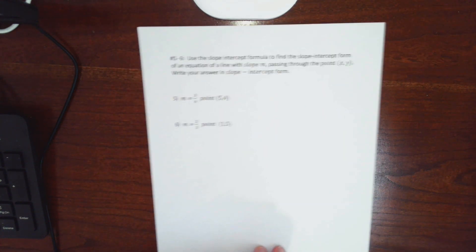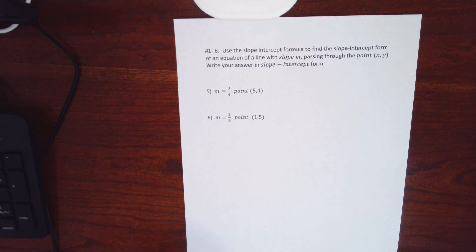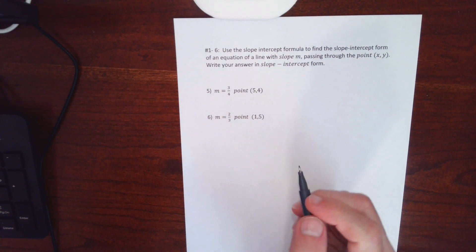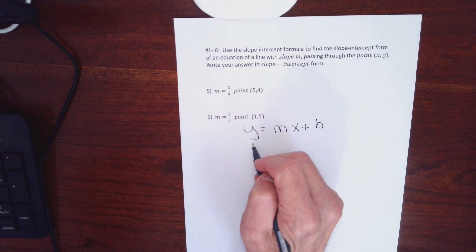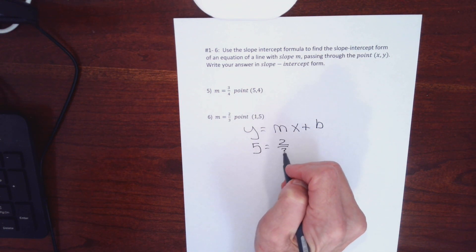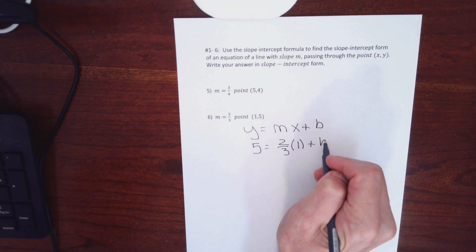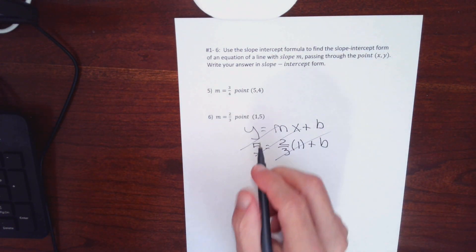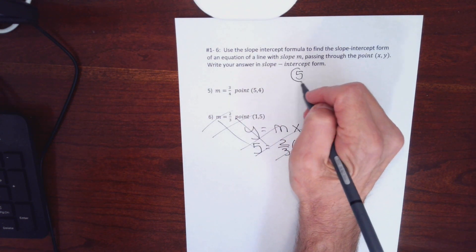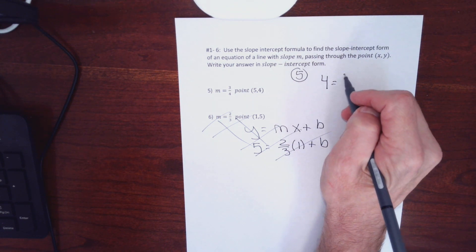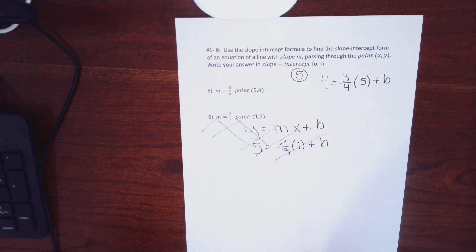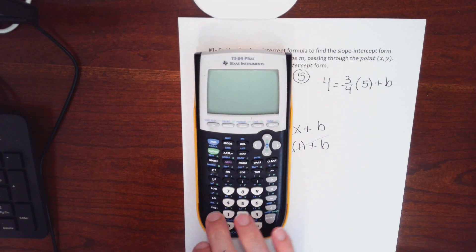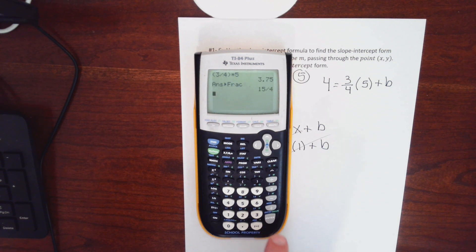One more before we move on to the other formula. For problem 5, I use y equals mx plus b: I plug 4 for y, three-fourths for m, 5 for x. I need to multiply three-quarters times 5 — that's 15 over 4. When multiplying a fraction by an integer, multiply the numerator by that integer.